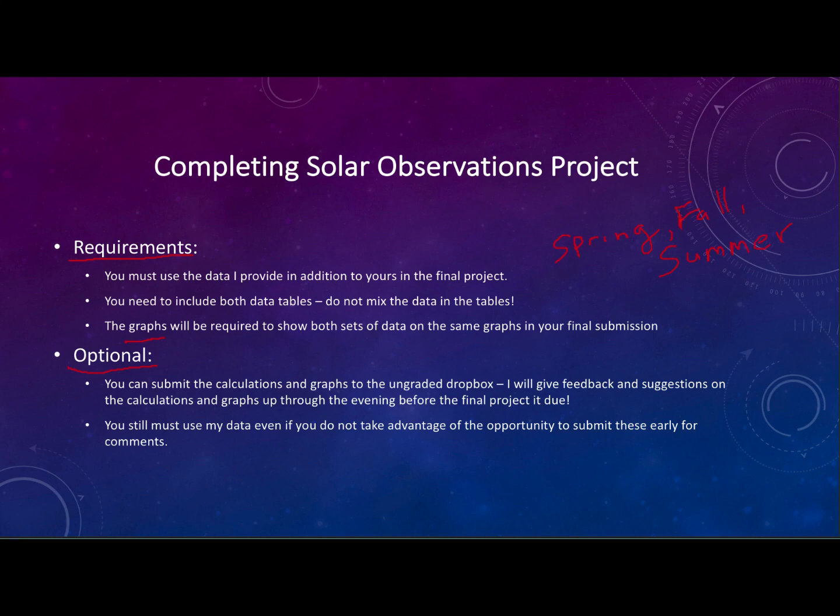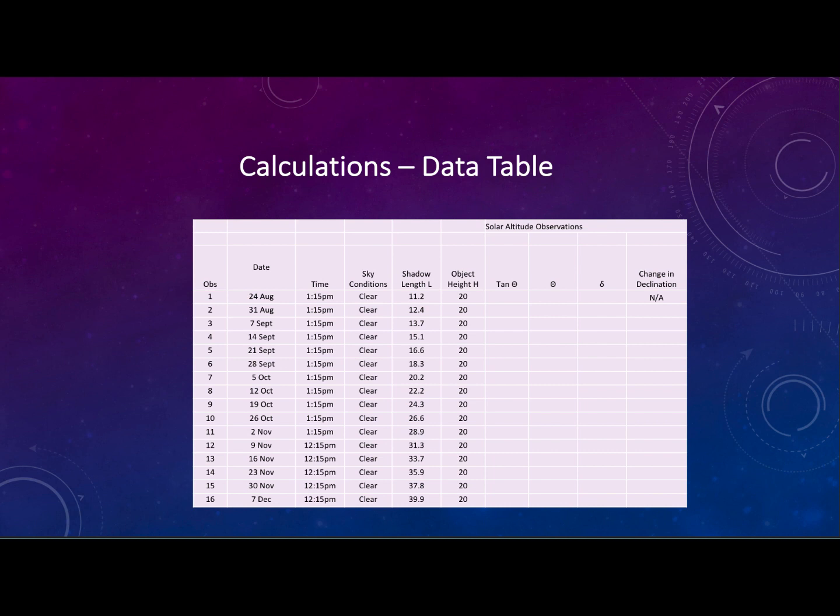So let's look at a sample data table here and this is an example of what you'd see. This would be for the fall term. I have an object height here with no specific units. You would want to record those in yours. You can imagine that these are all centimeters for example and the shadow lengths in the same set of units. In these last four columns you will need for the rest of the project. So how are we going to do those calculations?